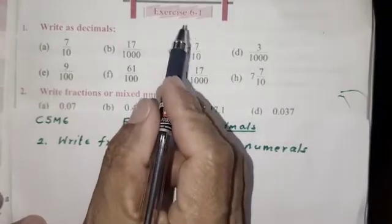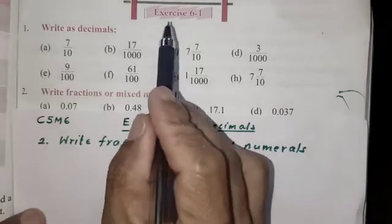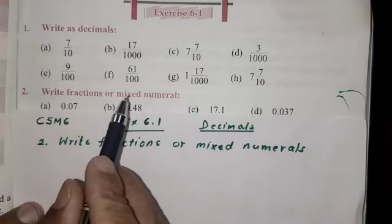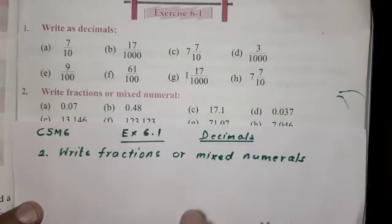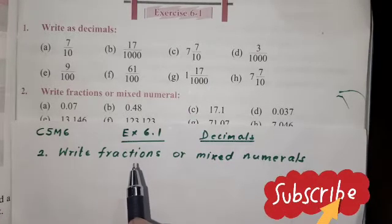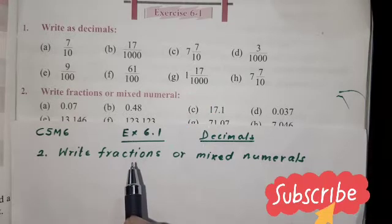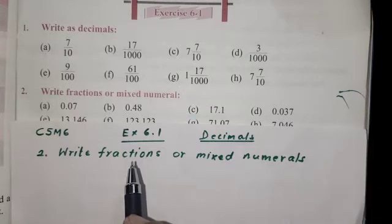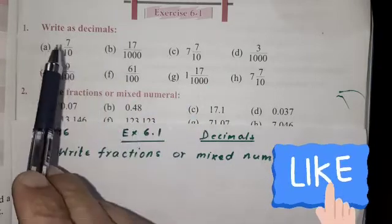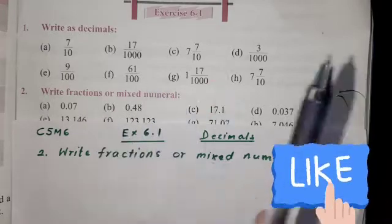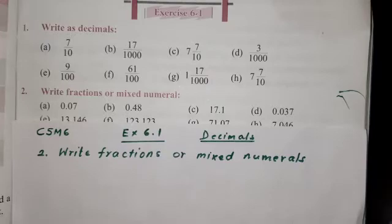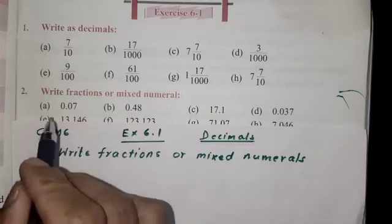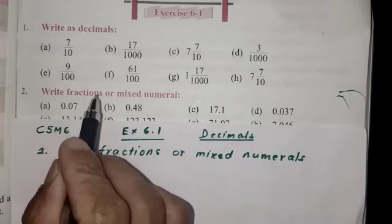Hello, my dear friends and students of class 5. We are going to learn from exercise 6.1. Question number 1 is already done and we shall learn from question number 2 - right fraction or mixed numeral. There is a decimal number you have to write down. It will be difficult. Question number 2: right fraction or mixed numeral.